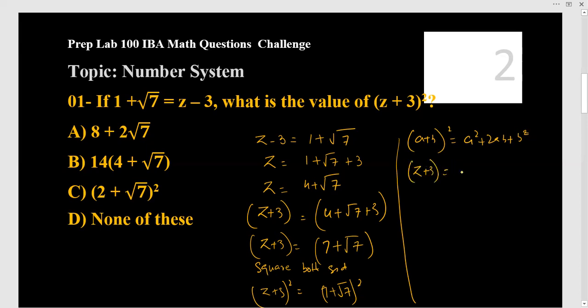So (z + 3)² is equal to... you have to find (7 + √7)². So 7² + 2 times 7 times √7... and (√7)², which is b². Okay. So 7² = 49, 2 × 7 = 14√7, and (√7)² = 7.